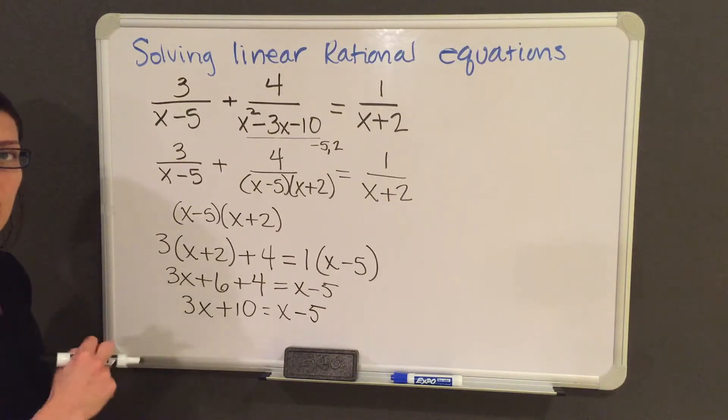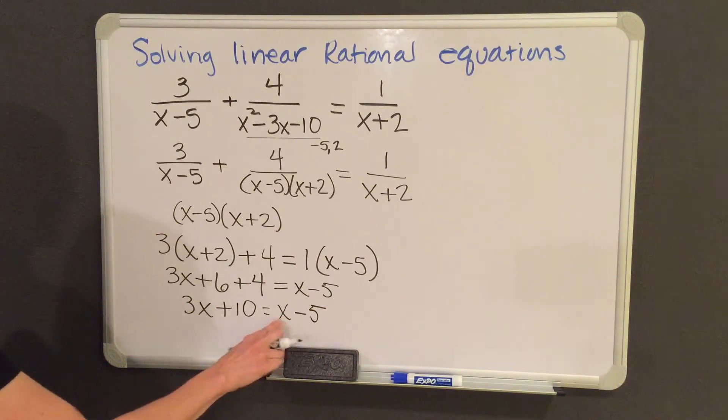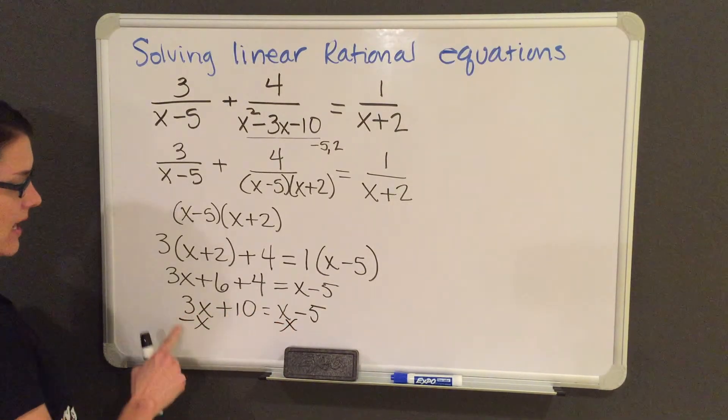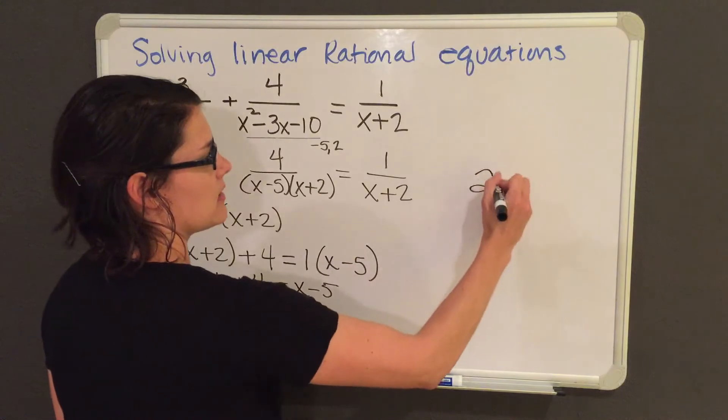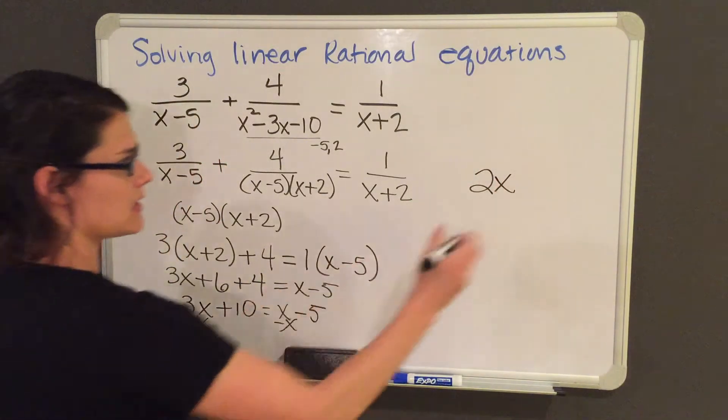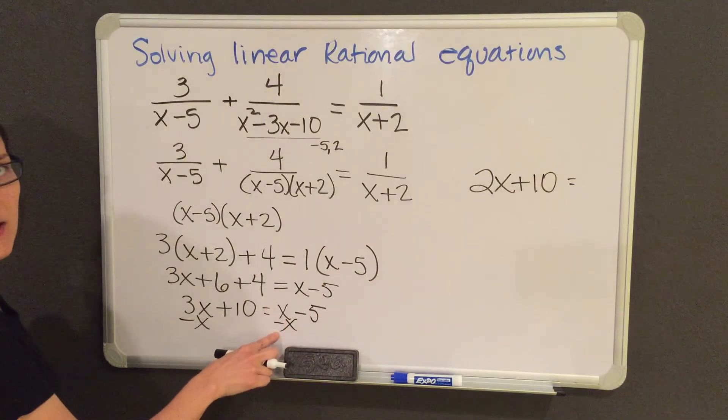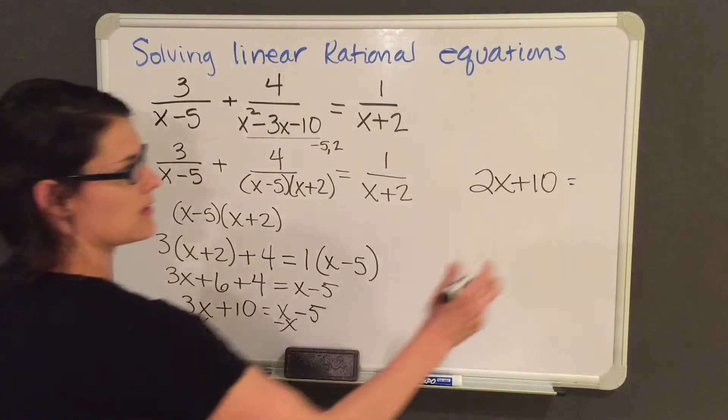Now I'm going to start isolating my x. I'm going to subtract x from both sides. And 3x minus x gives me 2x plus 10. And the x's on the right hand side cancel out and I'm left with negative 5.